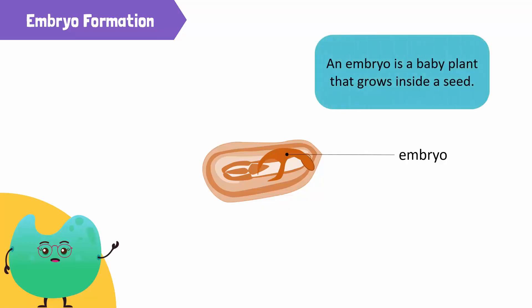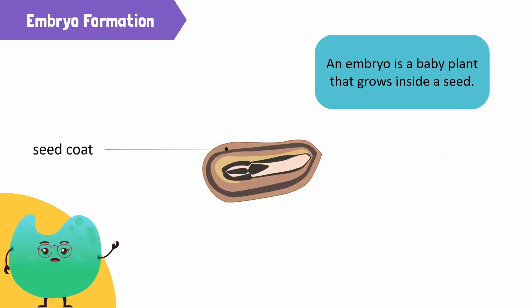An embryo is a baby plant that goes inside a seed. Finally, during the end of fertilization, the embryo is covered by a tough outer covering called a seed coat.